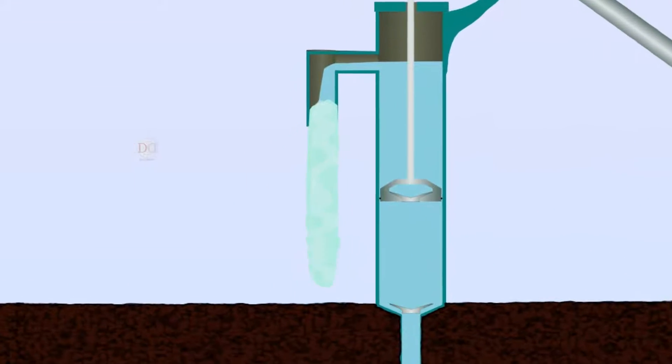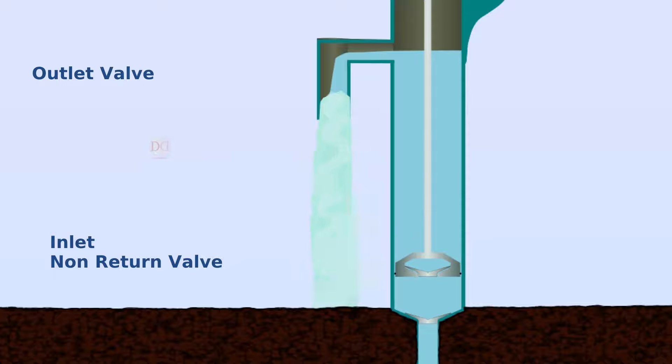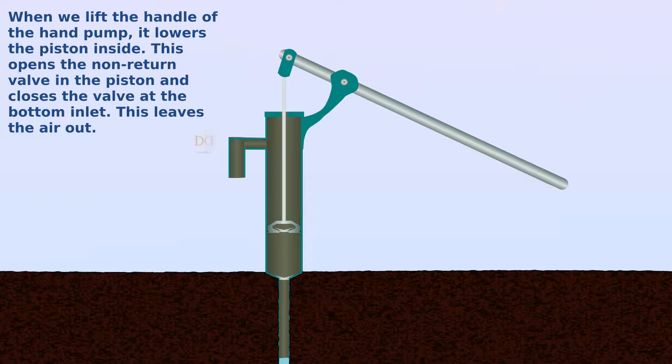The hand pump is made of a piston that can move back and forth inside a pipe. It has two non-return valves which control the flow of water inside the pump. The hand pump lifts the piston inside.